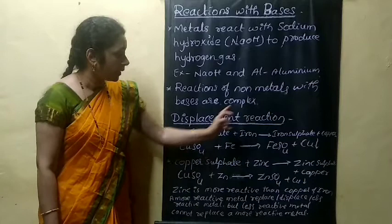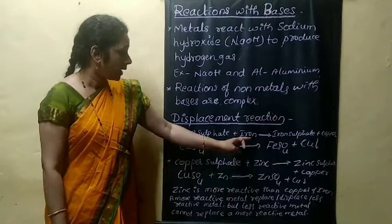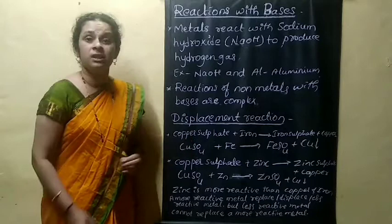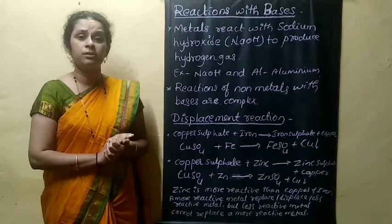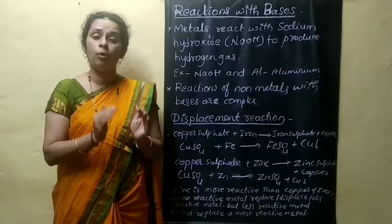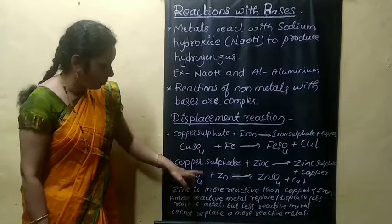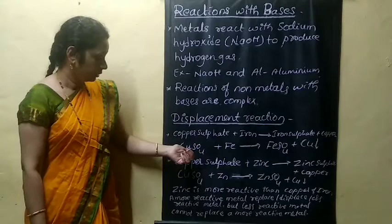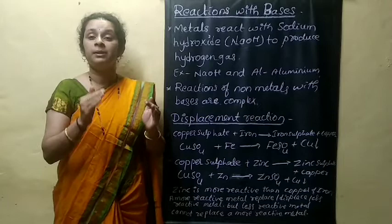In these reactions, iron displaces copper from copper sulfate to form iron sulfate, and copper is deposited. Zinc is more reactive and displaces copper from its solution. Iron is more reactive than copper, which is why it replaces copper from its solution. These are examples of chemical displacement reaction, where more reactive metal displaces less reactive element from its compounds.